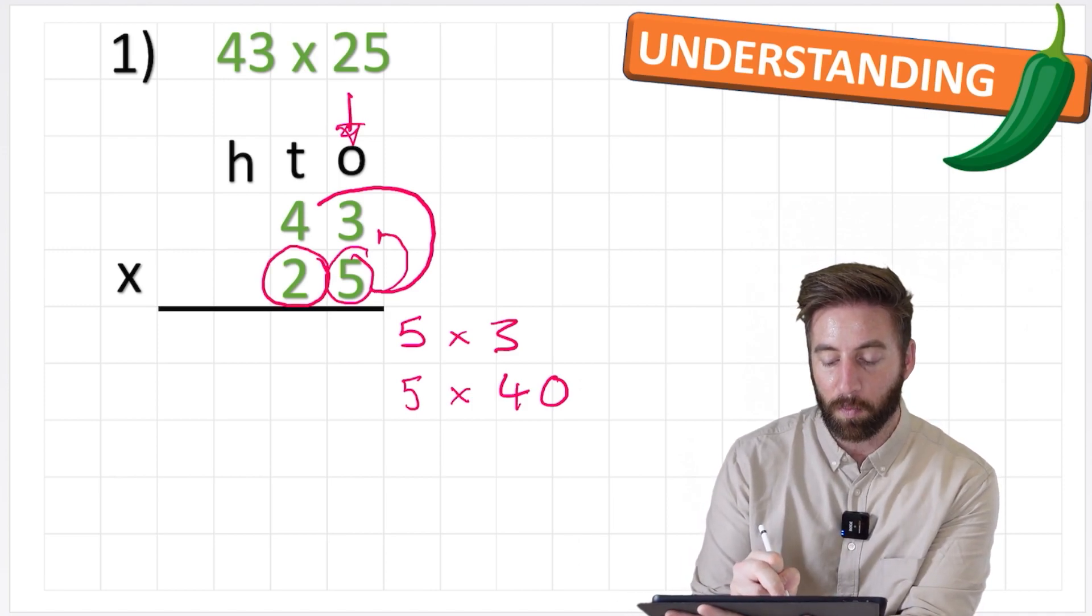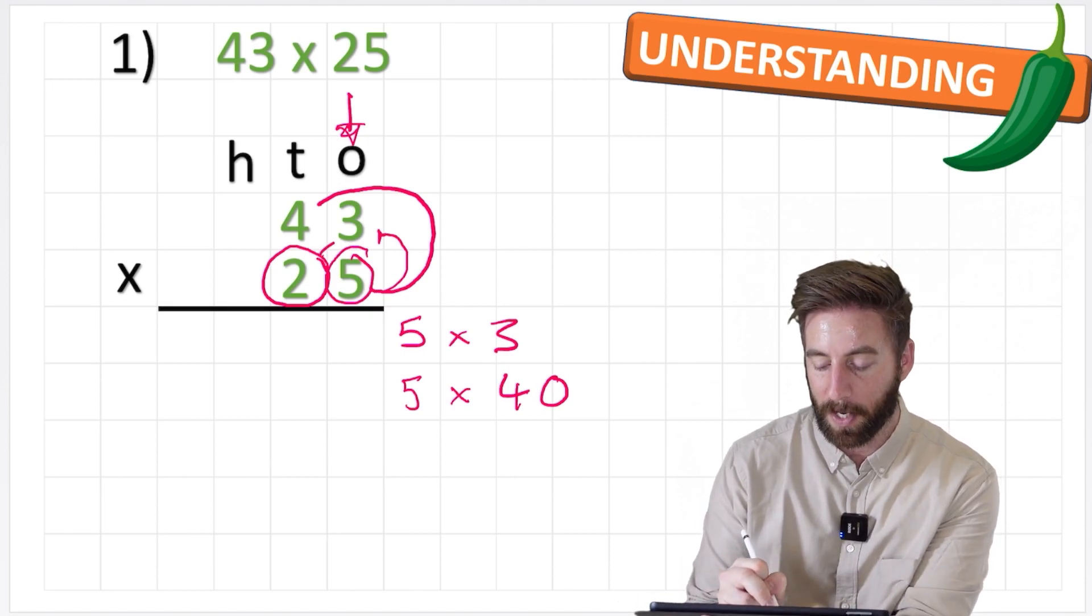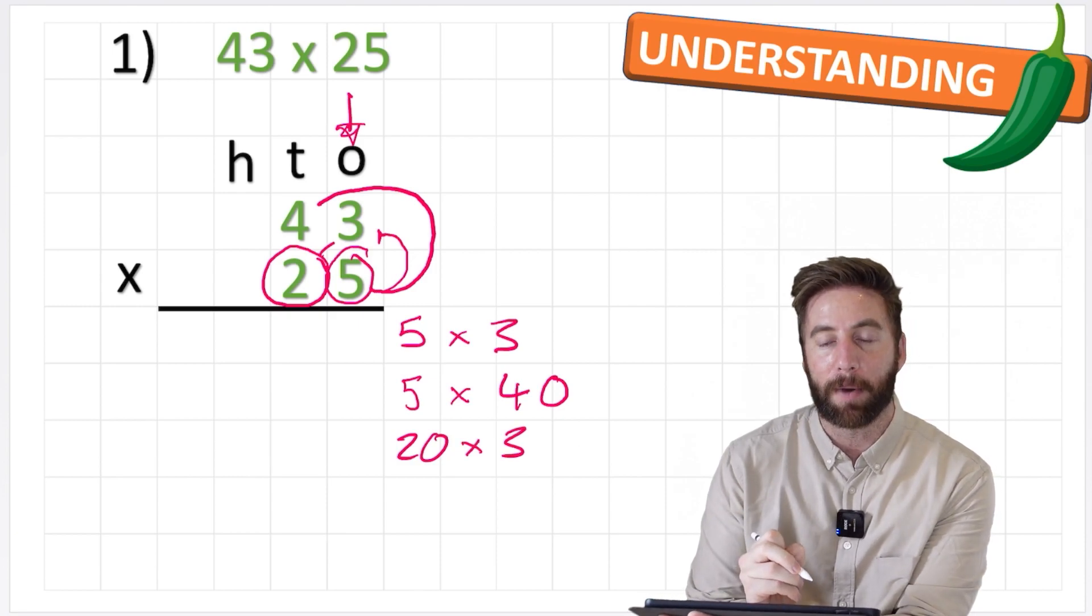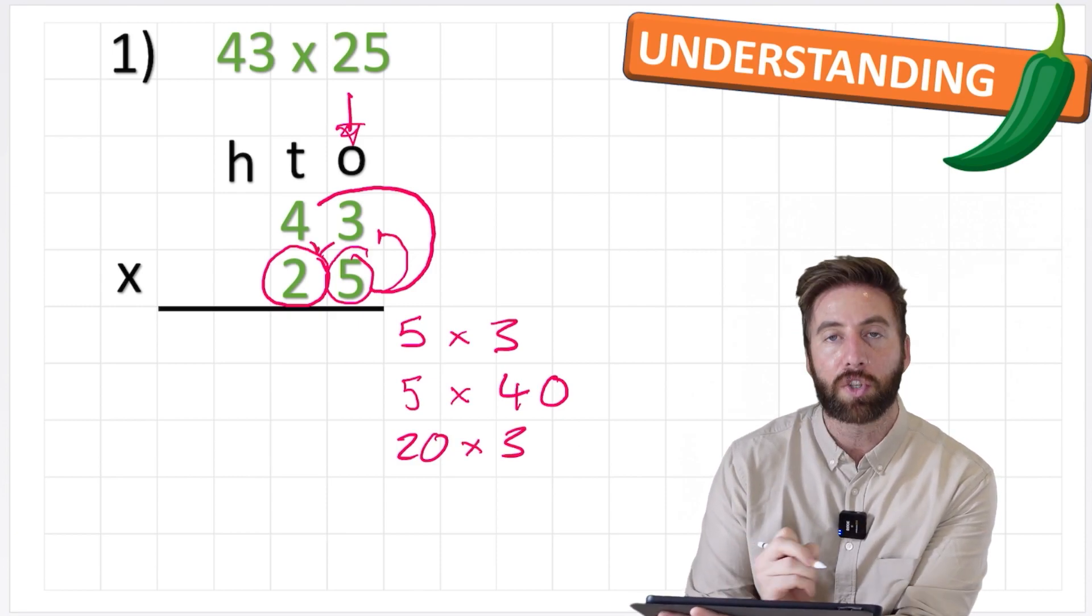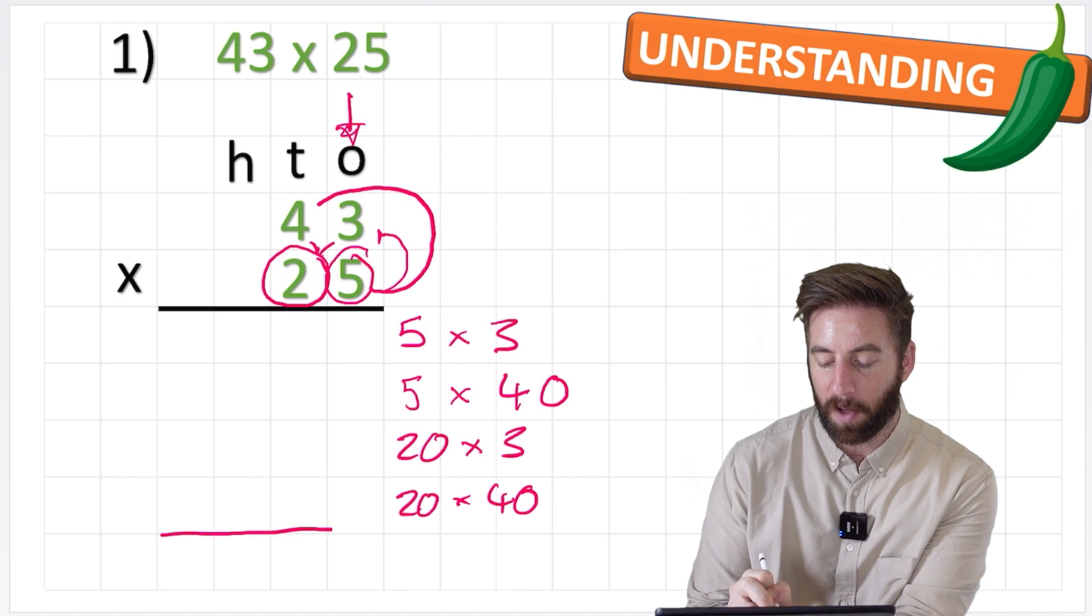So my first question should be 2 times 3 but like we say it's not a 2, it's a 20. So 20 times 3. And then my last question would be 2 times 4 or 20 times 40. And now I'm ready to begin.